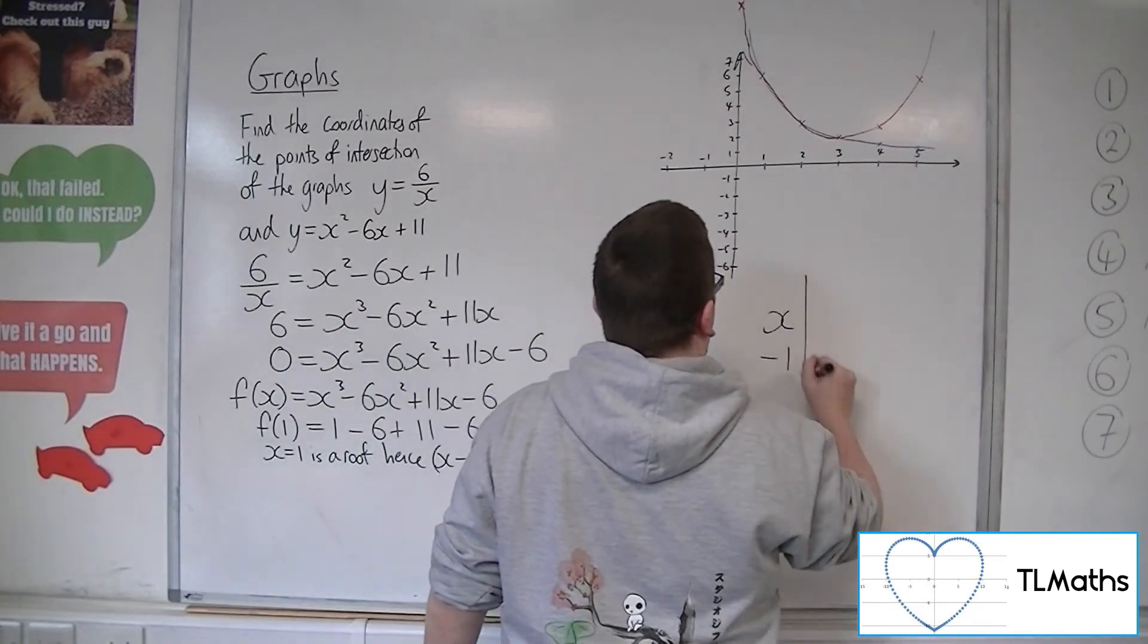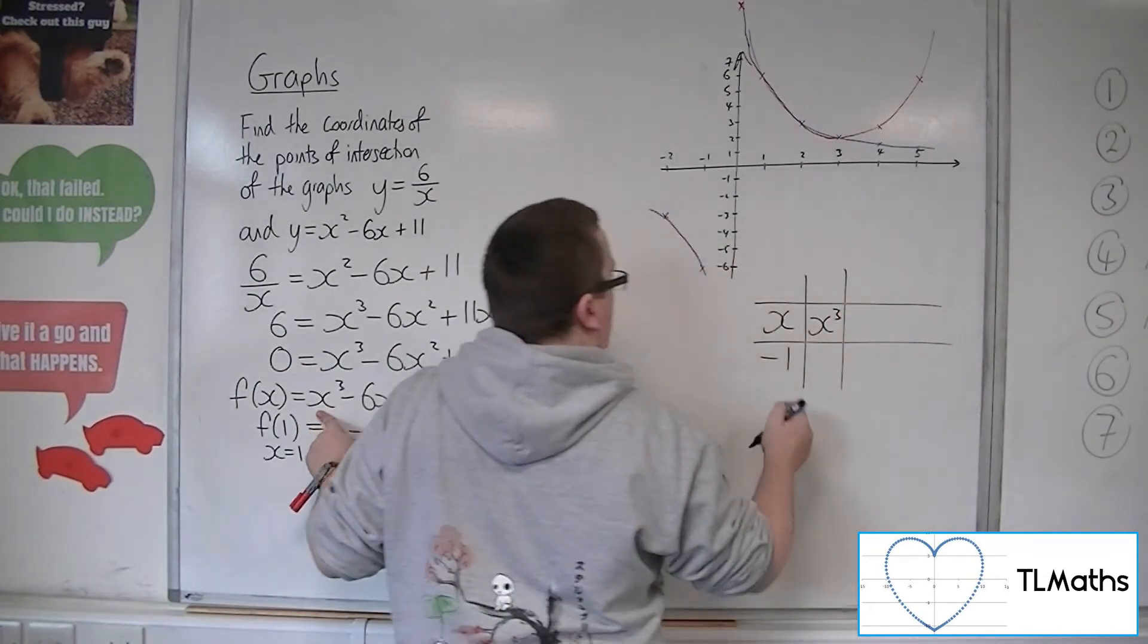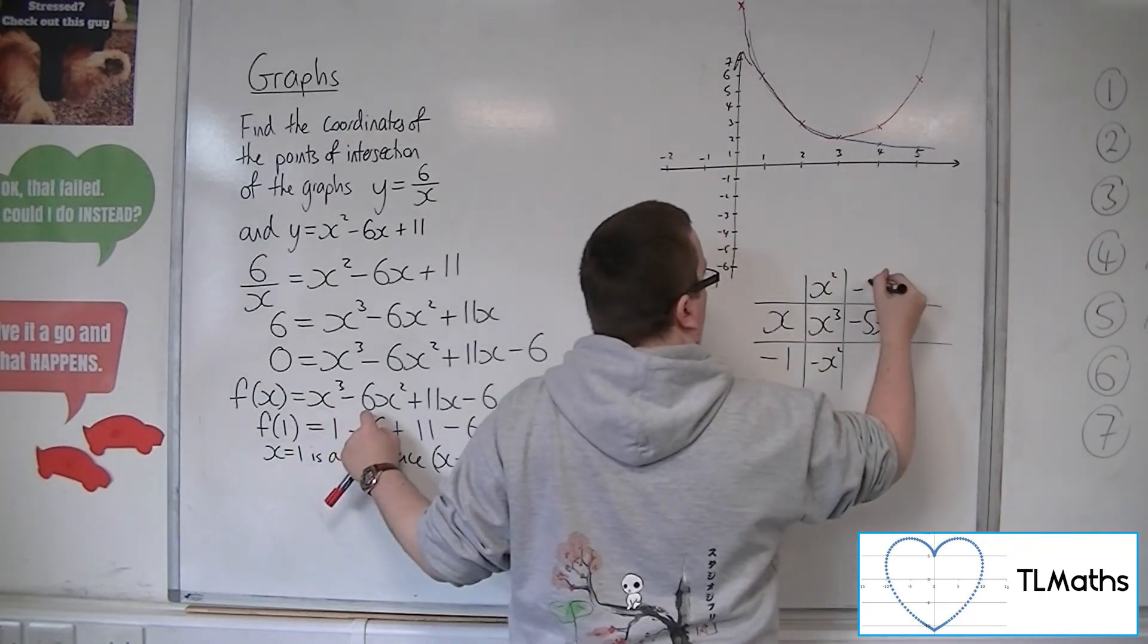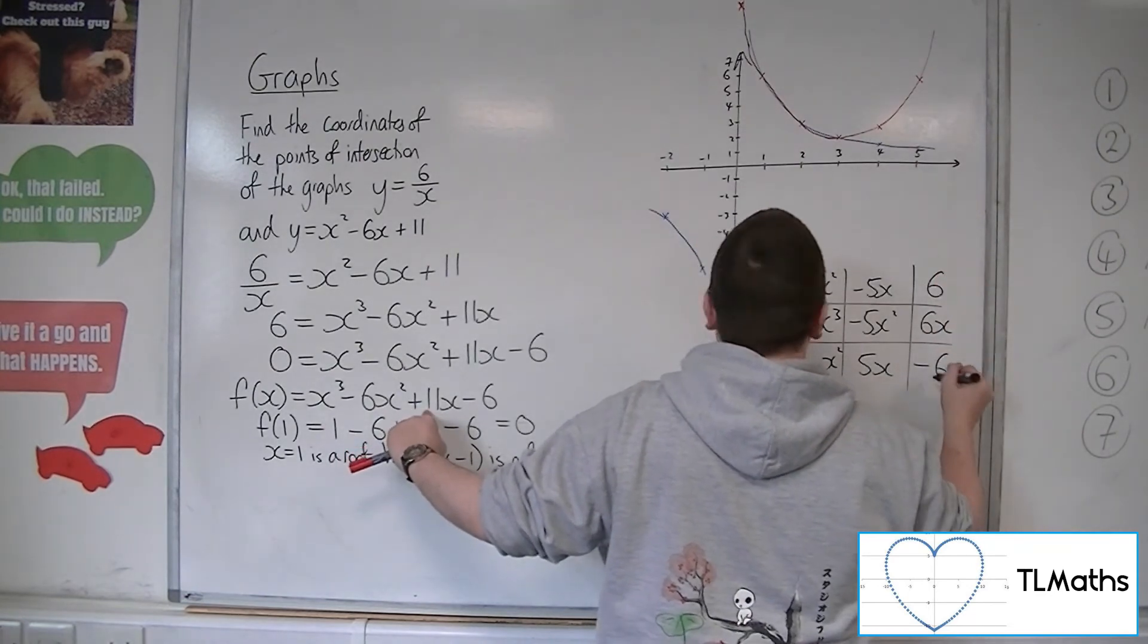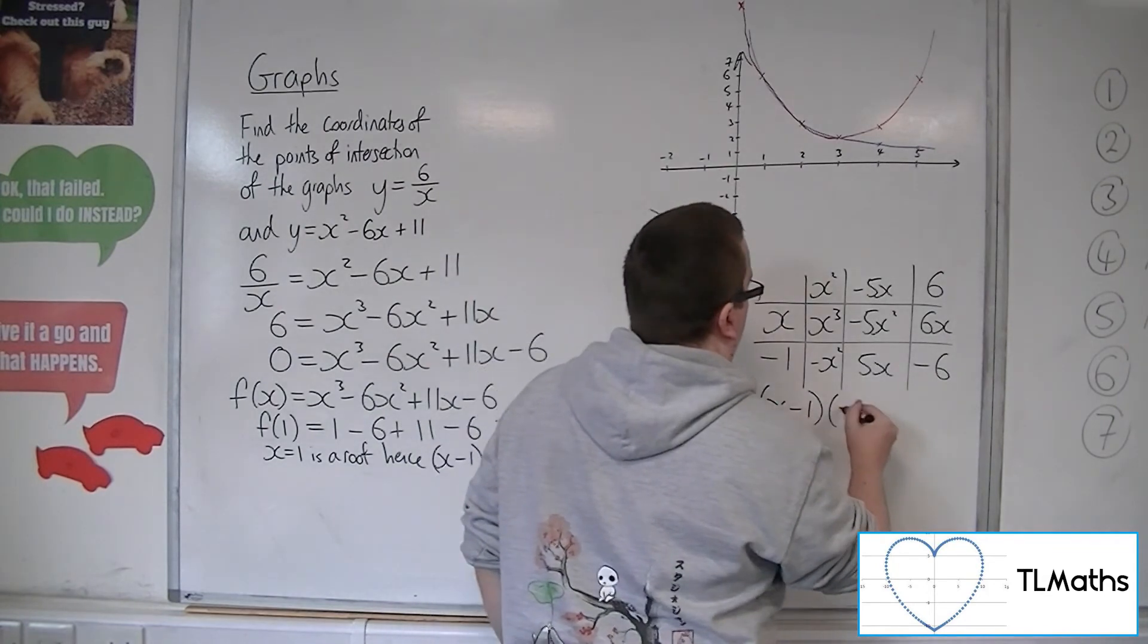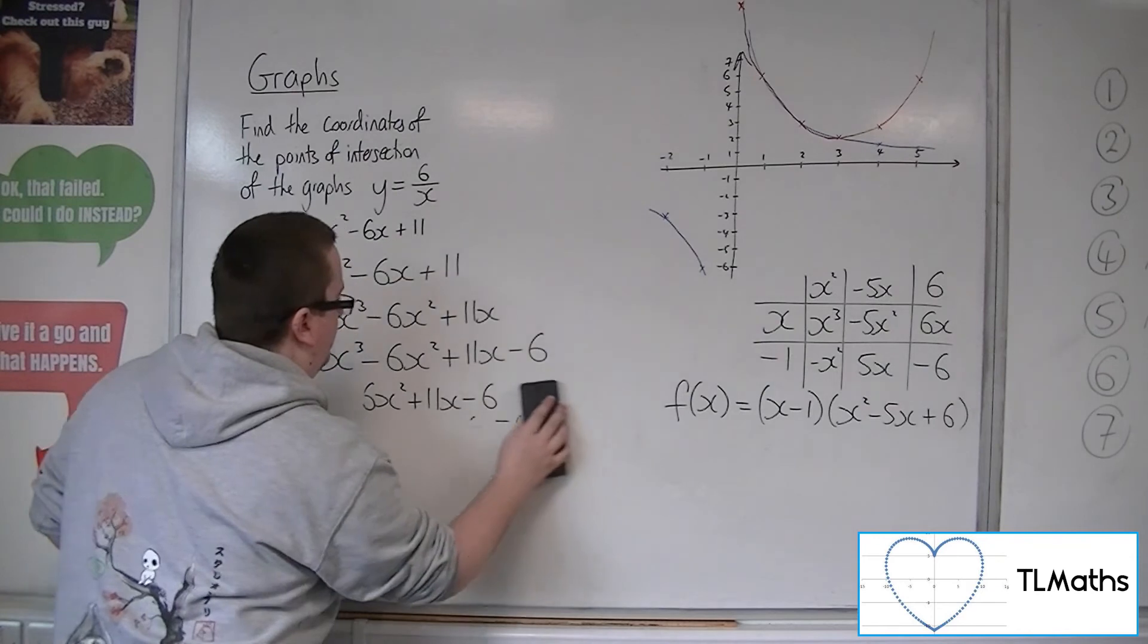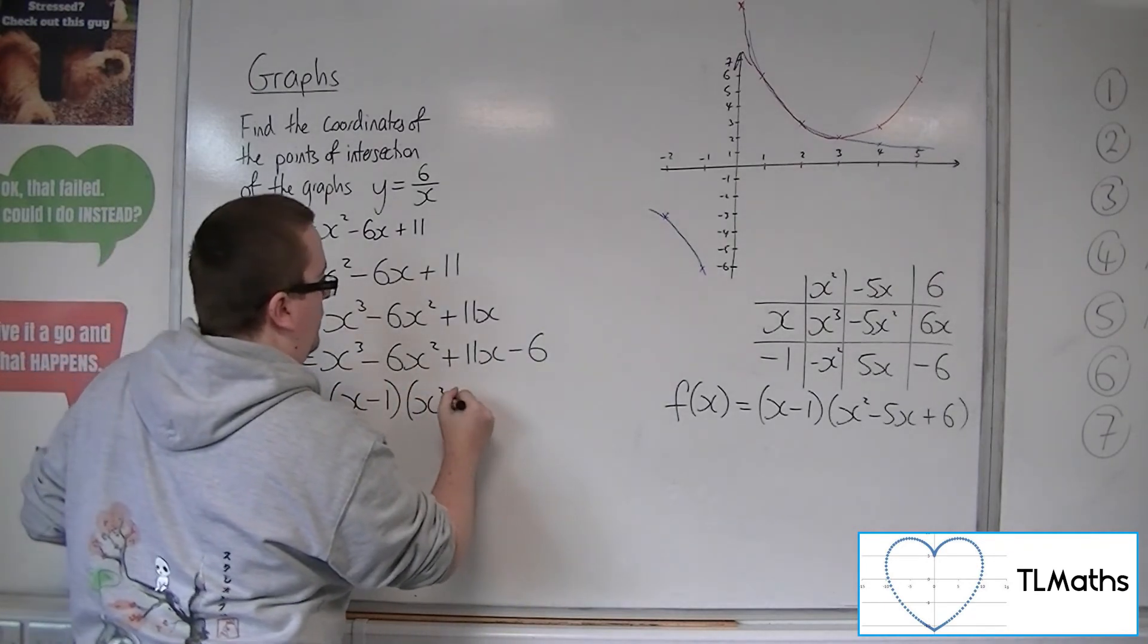So I will have x minus 1. Now I need to get x cubed. So x times x squared will make x cubed. x squared times minus 1 is minus x squared. I need minus 6x squared, so minus 5x squared there. x lots of minus 5x will make minus 5x squared, so I'd have 5x there. I need 11x, so that's got to be 6x, so that's got to be 6x, that's got to be minus 6, and that matches what I have there. So that means that f of x can be written as x minus 1 times x squared minus 5x plus 6. So that means that this equation here factorises, so I can write it as 0 equals x minus 1 times x squared minus 5x plus 6.